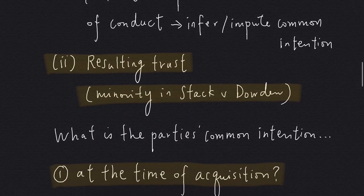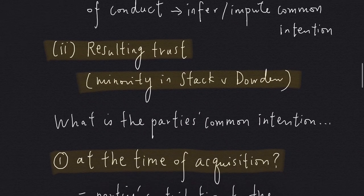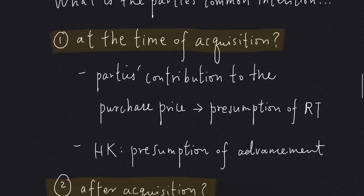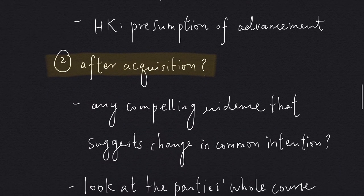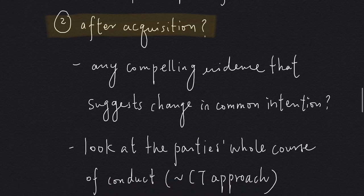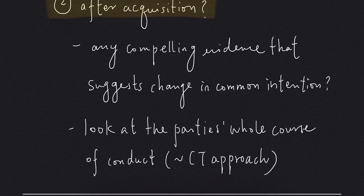Moving on to the resulting trust approach, there are two questions we have to ask. For the first question, we ask what is the parties' common intention at the time of acquisition — so we look at the parties' contribution towards the purchase price and whether the presumption of resulting trust may arise, and for Hong Kong, whether the presumption of advancement may also arise. For the second question, we ask whether the parties' common intention has changed after acquisition, so we look for any compelling evidence suggesting a change in common intention by examining the parties' whole course of conduct. This is when the common intention constructive trust approach may feed into the analysis.